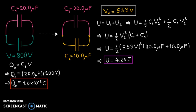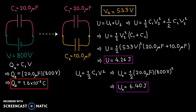Now, how did the energy change when the first capacitor was disconnected from the source and connected to the second capacitor? Let's calculate the energy originally stored in the first capacitor and compare. The initial potential energy U0 equals one-half C1 V squared, with V being the 800 volts applied initially, giving U0 equals 6.40 joules. Subtracting the final potential energy from the initial, we see a decrease of 2.14 joules.